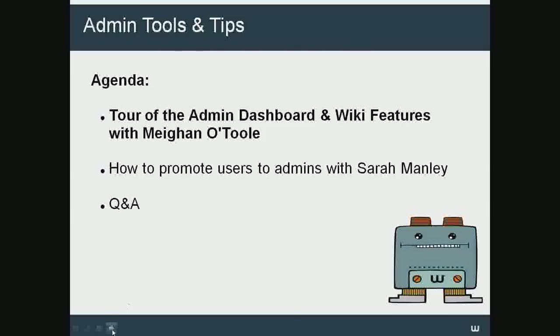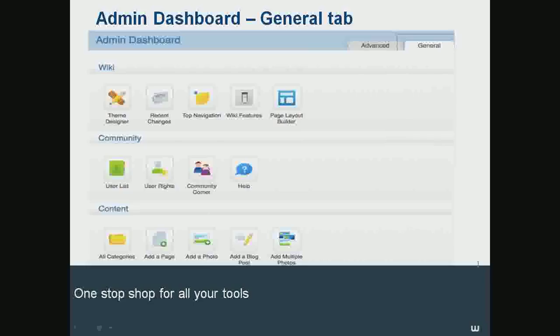Today I'm going to walk you through the admin dashboard, which is a feature we rolled out in July. If you're on a wiki and you are an admin, you can find it at the bottom on your toolbar. There's a word that just says admin, and you can click on that, and that will bring up the admin dashboard. Basically, the admin dashboard was created as a one-stop shop for all your admin needs. The very first page, under the general tab, has all of the tools and features that we thought admins used the most. So let's dive in and go over those buttons.